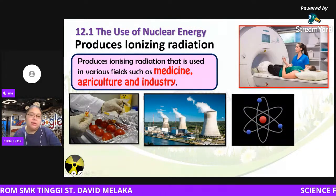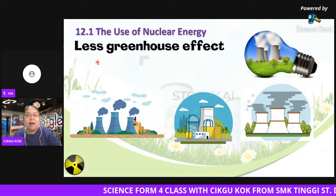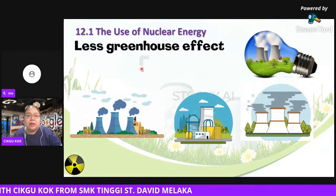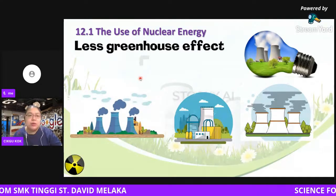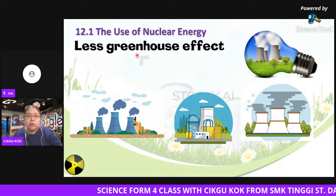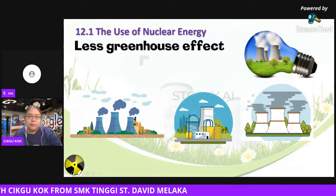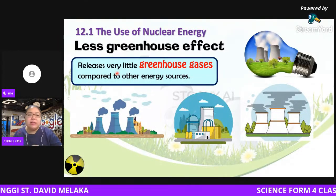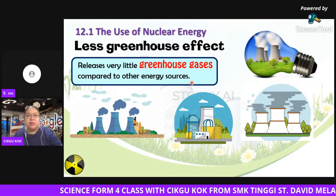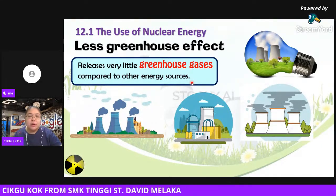The third use of nuclear energy is that it produces less greenhouse effect. Because there is no burning — no petrol, no gas, no charcoal being burned — nuclear energy releases very little greenhouse gases compared to other energy sources. That is why we consider choosing nuclear energy.